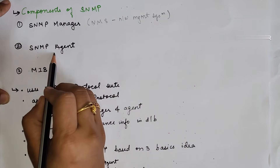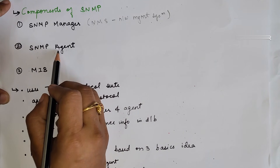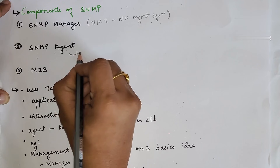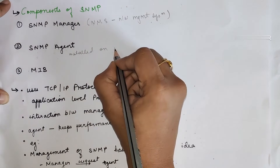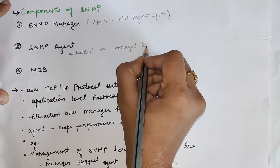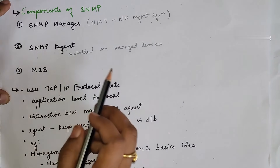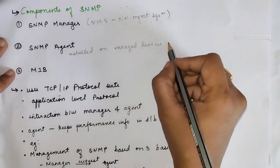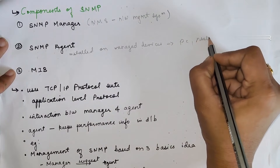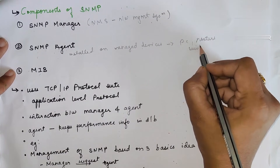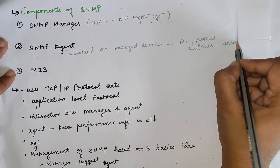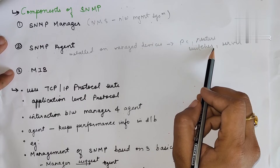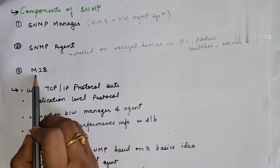The second component is the SNMP agent. It is a software management module that is installed on managed devices. This software is installed on different devices — the managed devices can be your PC, routers, switches, or servers. These are the different managed devices, and this software module is installed on them so that they can be tracked very easily.